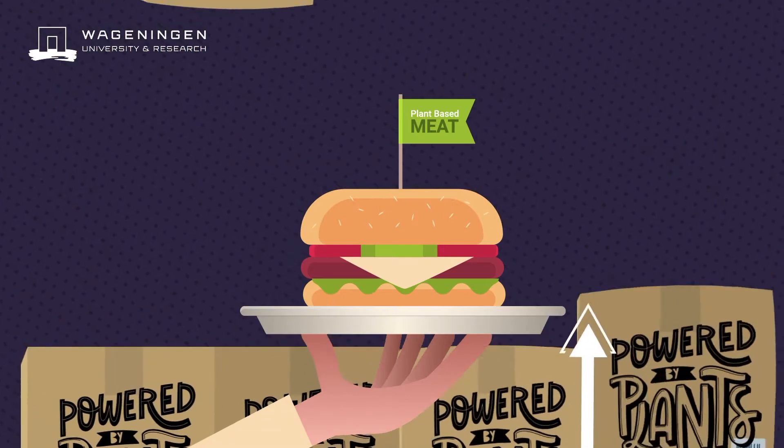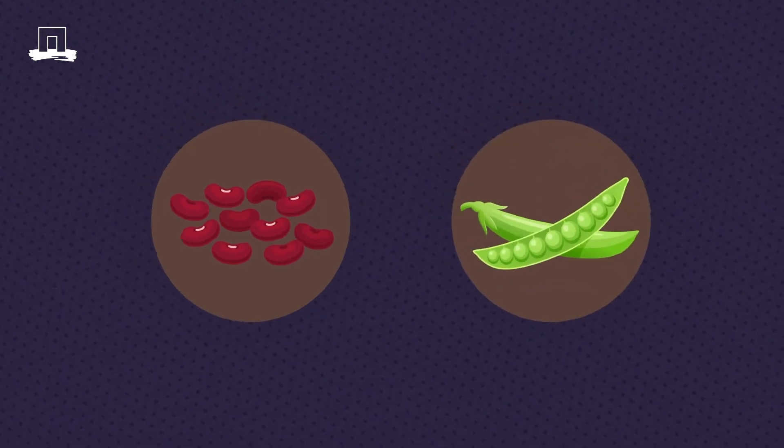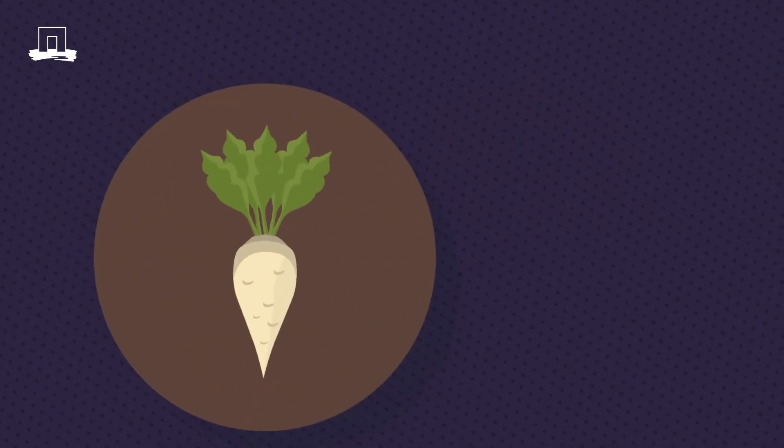There is a growing demand for plant-based proteins. Proteins can be extracted from various crops like beans and peas, but also from side streams like leaves of sugar beets.